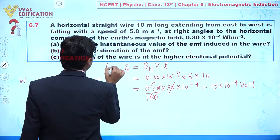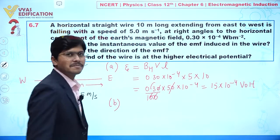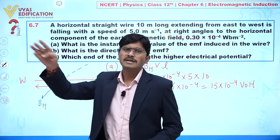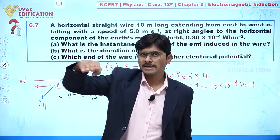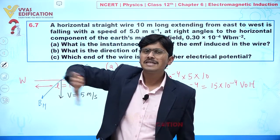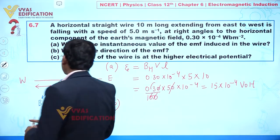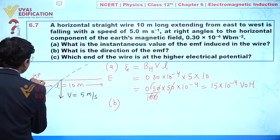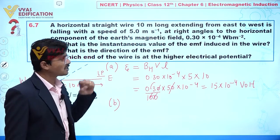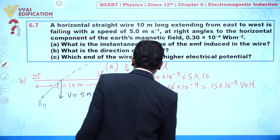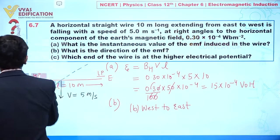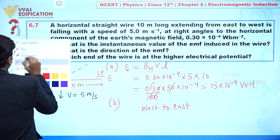This completes part (a). For part (b), we need the direction of the induced EMF. Using the right-hand rule: fingers point in the direction of the magnetic field, the thumb indicates the direction of velocity, and the palm represents the direction of higher potential. From this, the west end is at higher potential and the east end is at lower potential. So the direction of the induced EMF is from west to east.